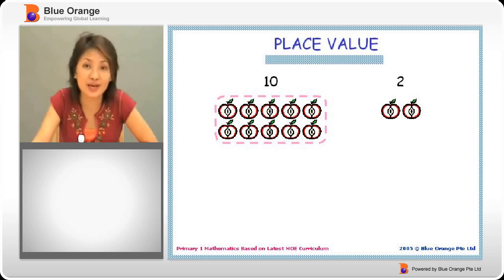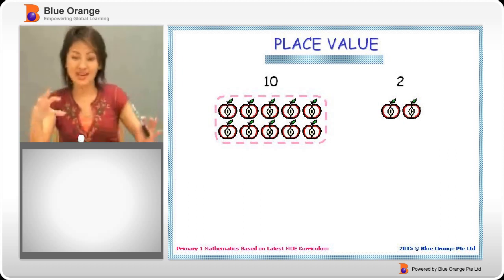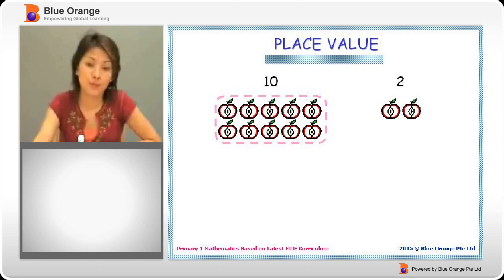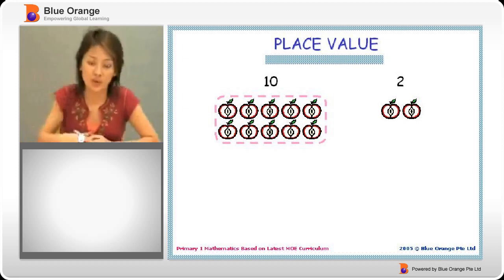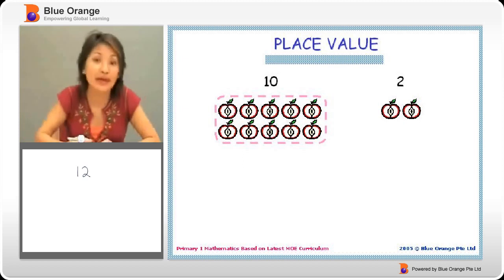Now if we look at the apples here, we have a group of 10 and a group of 2. Of course we know that if we count, 10, 11, 12, we know that there are 12 apples.